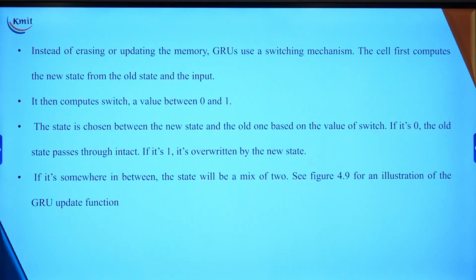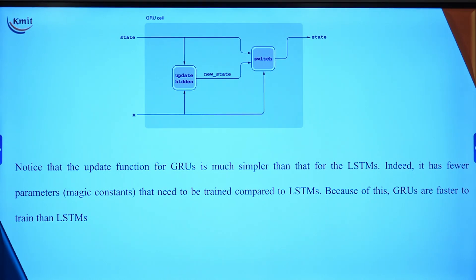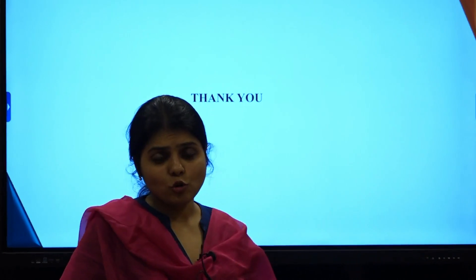This is the main difference between GRU architecture and LSTM architecture. With this simpler architecture, GRUs tend to train faster than LSTMs. This is the mechanism of how GRUs work, making them a great alternative to RNNs and LSTMs.